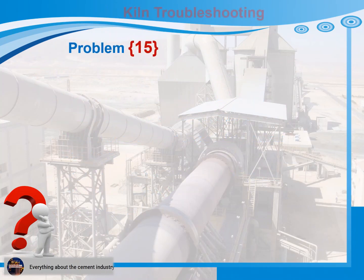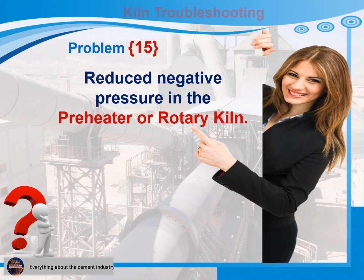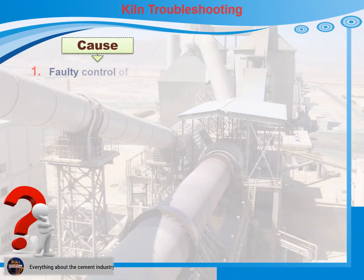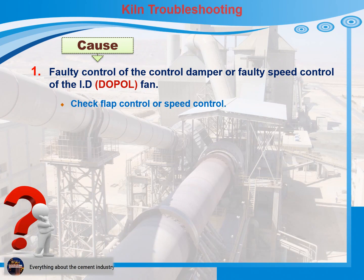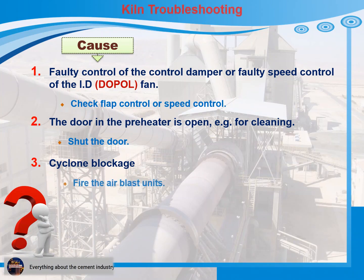Problem 15: Reduced negative pressure in the preheater or rotary kiln. Cause 1: Faulty control of the control damper or faulty speed control of the ID fan. Recommendations for action: Check flap control or speed control. Cause 2: The door in the preheater is open for cleaning. Recommendations for action: Shut the door. Cause 3: Cyclone blockage. Recommendations for action: 1) Fire the air blast units. 2) Clean.